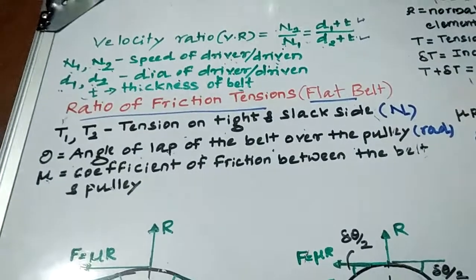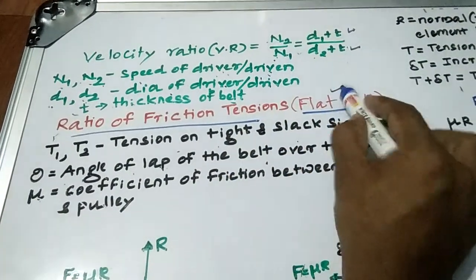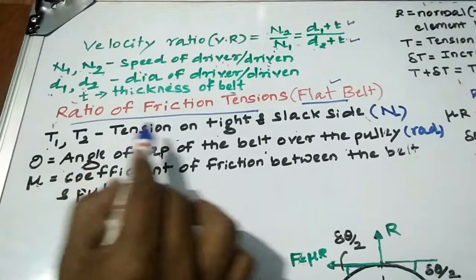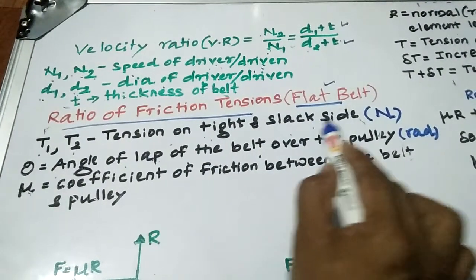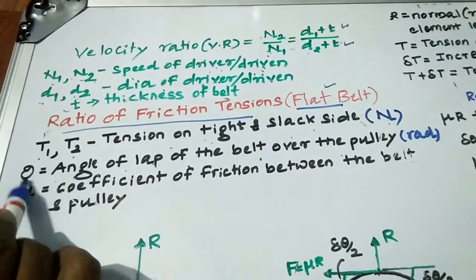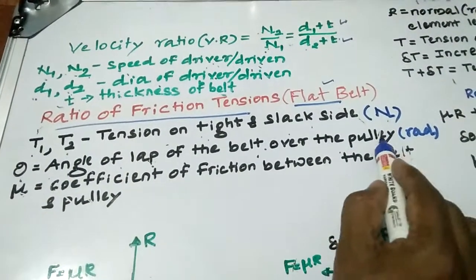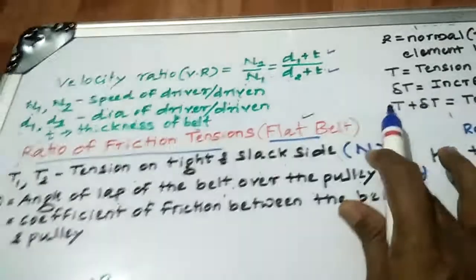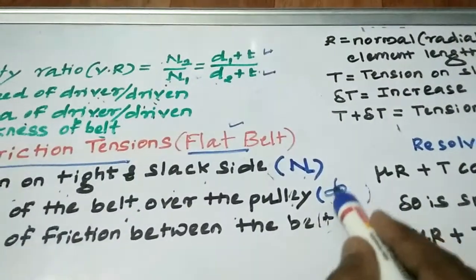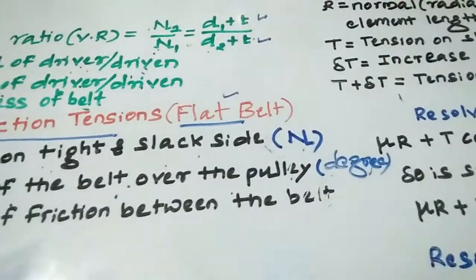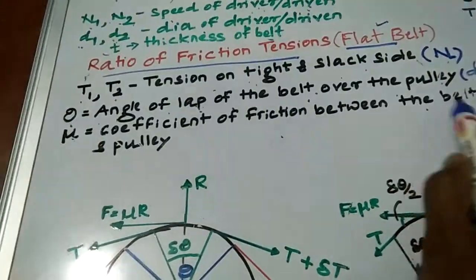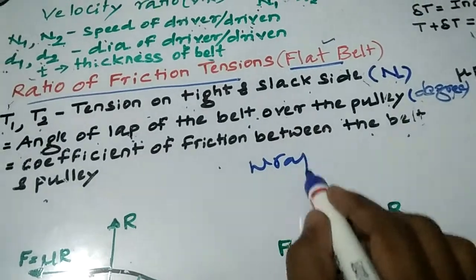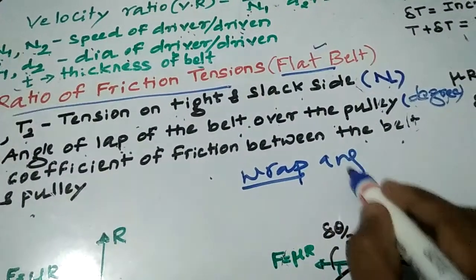I will determine the tension in the belt for the flat belt only. Before that, I will give some nomenclature. T1 is the tension in the tight side. T2 is the tension on the slack side, with units of Newton. Theta is the angle of lap of the belt over the pulley, in degrees, which you can convert to radians. Mu is the coefficient of friction between the belt and pulley. The lap angle is also called the wrap angle.